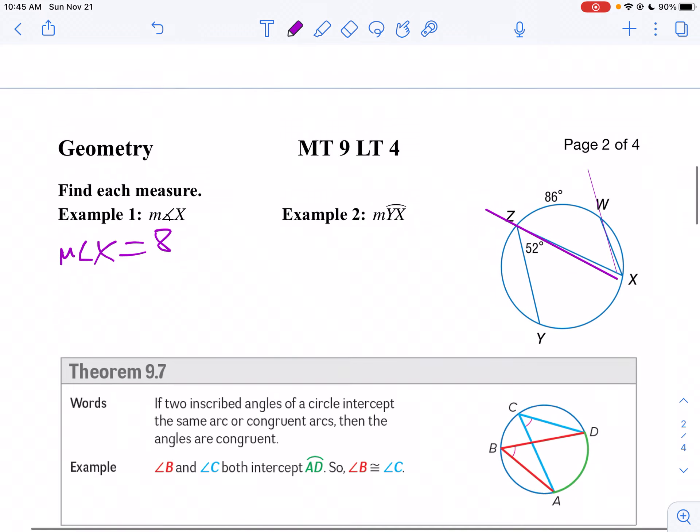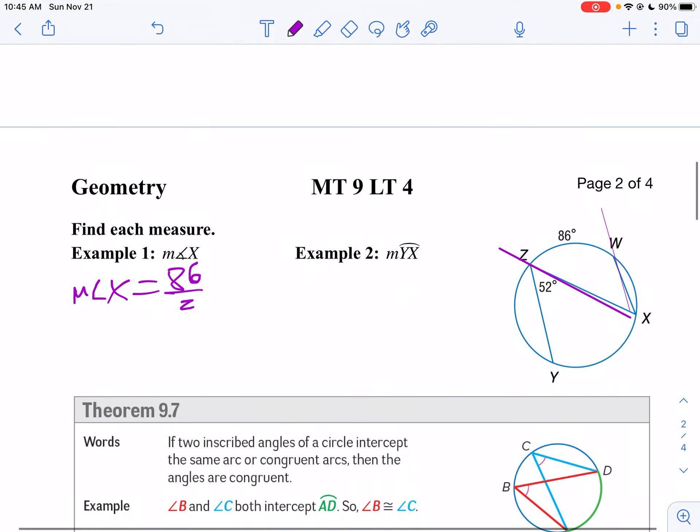So 86 degrees is the angle that's been subtended by x. So 86 divided by 2, which is 43 degrees. There you have it.